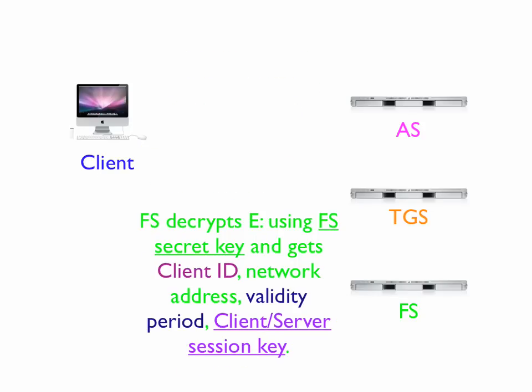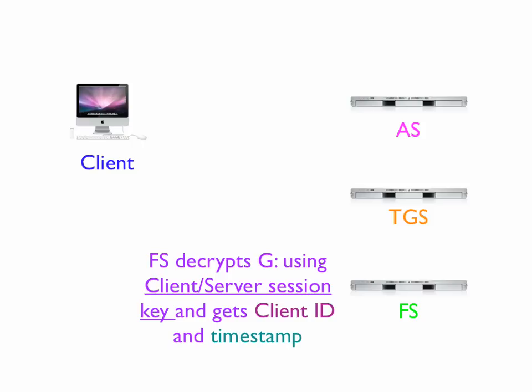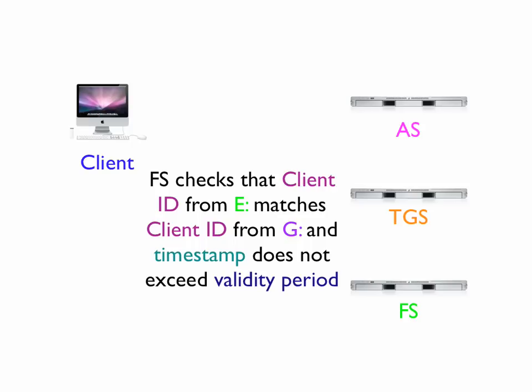The file server obtains the client-server session key when it decrypts message E, along with the client ID, network address, and validity period. Since the file server now has the client-server session key, it can decrypt message G and gets the client ID and the timestamp. The file server now has the client ID from message E and the client ID from message G, and these two client IDs must match. It also checks whether the validity period is still valid or has expired.